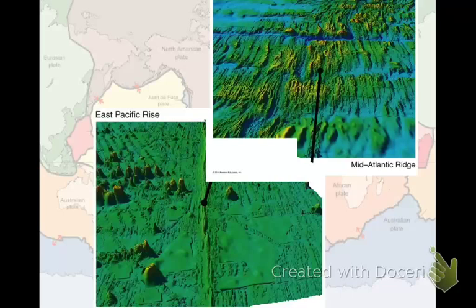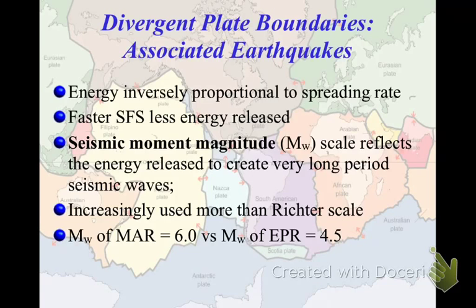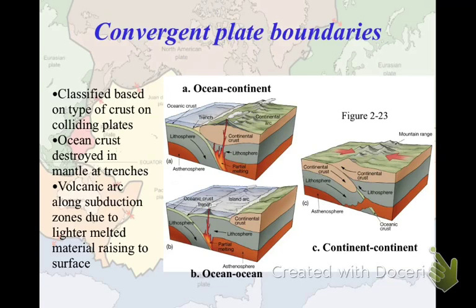At divergent plate boundaries, earthquake magnitude is inversely proportional to the spreading rate — the faster a plate spreads, the less energy is released because energy is released in a continuous stream with no chance to build up. While everybody talks about the Richter scale, scientists actually use seismic moment magnitude, or the MW scale, which is more representative of the energy released. A typical earthquake at the mid-ocean ridge is around 6.0, while at the East Pacific Rise it's more like 4.5. Both are lower than the earthquakes at convergent plate boundaries, which will be covered in the next video.